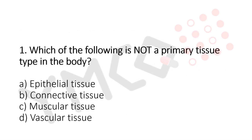Question 1: Which of the following is NOT a primary tissue in the body? Option A: epithelial tissue. Option B: connective tissue. Option C: muscular tissue. Option D: vascular tissue. The answer is Option D, vascular tissue.